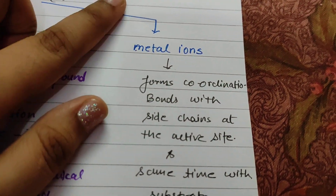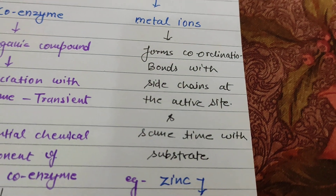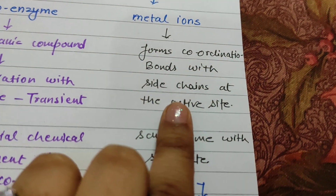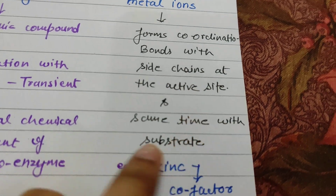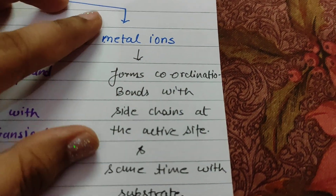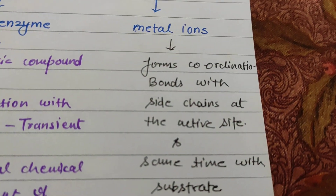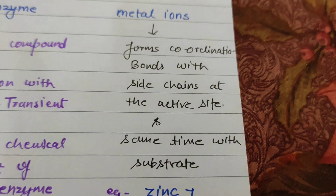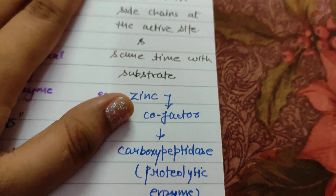The third part is Metal ions. Metal ions form what are called Coordination Bonds. A metal ion forms one Coordination Bond with the enzyme active site, and another Coordination Bond with the substrate. So metal ions bridge the enzyme active site and the substrate together.